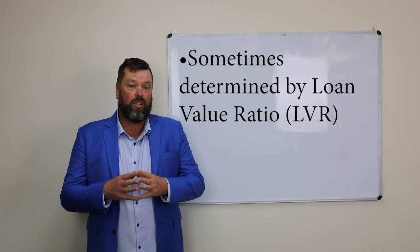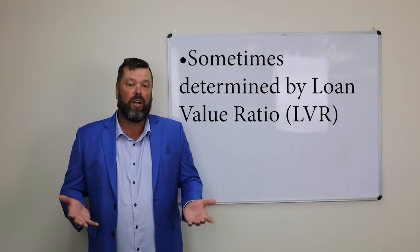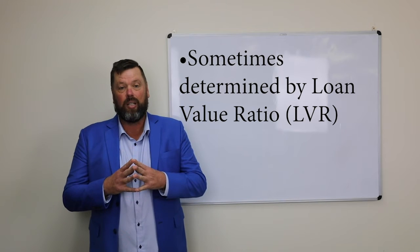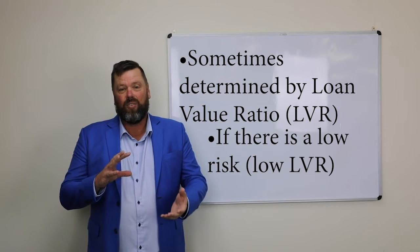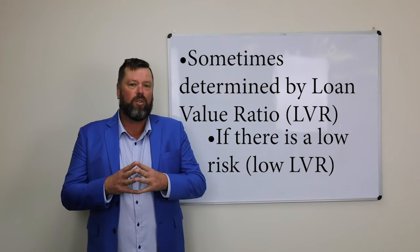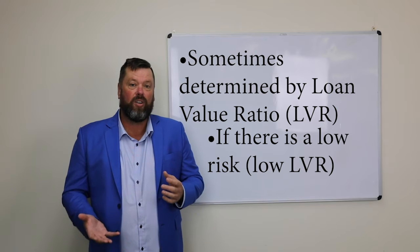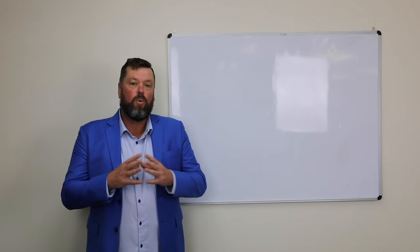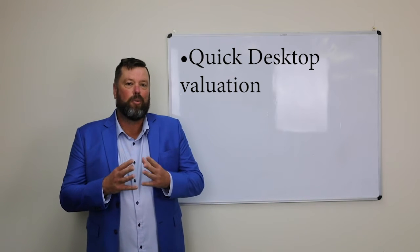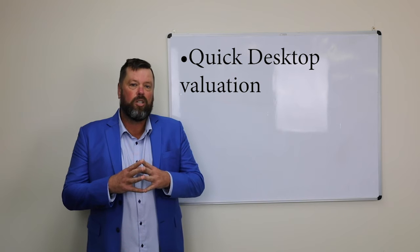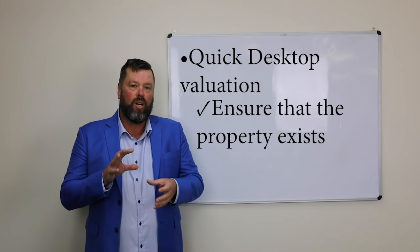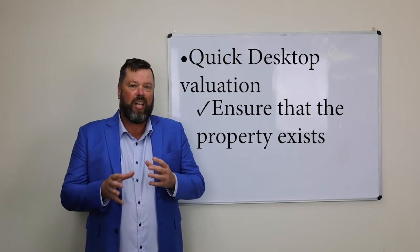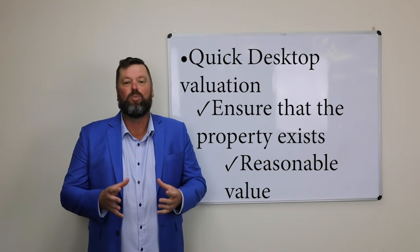For example, if you've got a $400,000 house and a debt of $200,000, that's an LVR of 50%. Where there's a low risk to the bank — the lower the LVR, the lower the risk — they might just do a quick desktop valuation to ensure the property exists and is at a reasonable value to what you, the owner, are declaring.